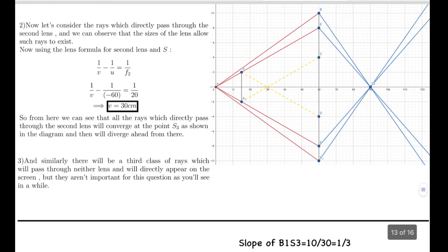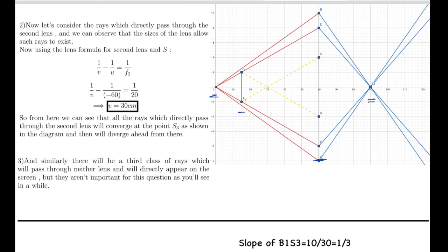Now the second type of rays: let's consider rays which directly pass through the second lens only. The sizes of the lenses allow such rays to exist — the angle subtended by lens AA1 and lens BB1 are such that some rays from S will bypass lens A and directly contact lens 2. Using the lens formula for this lens with object at S, 1/V − 1/U = 1/20, the value of V comes out to be 30 cm. So the image forms at S3, and all such rays from S pass through S3.